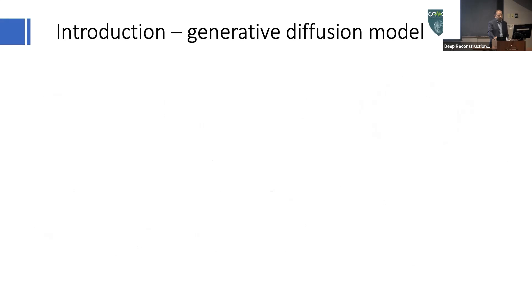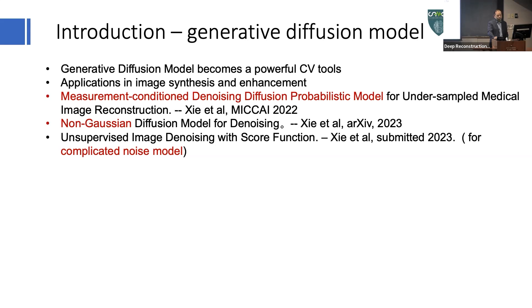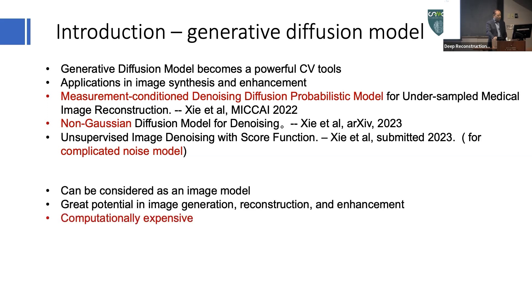The other part is related to the diffusion model. The generative diffusion model has become a very powerful tool in computer vision — the number of publications related to it is increasing very fast. Even commercial software has started using this technique to generate images. In the medical domain, people are starting to use this for image synthesis and image enhancement. I noticed some of you in the audience already have publications on these topics on arXiv.